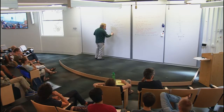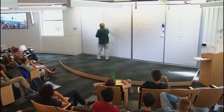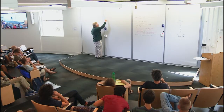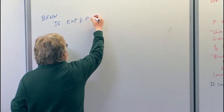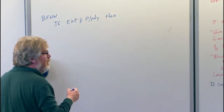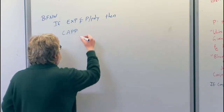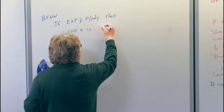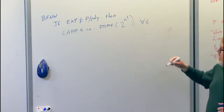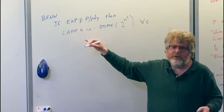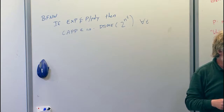Last time we saw results like: if EXP is not in P/poly, then the circuit approximation probability problem — CAPP — is in time 2^(n^epsilon) for every epsilon, infinitely often. So a sub-exponential derandomization of this problem that can actually handle every kind of probabilistic decision problem.